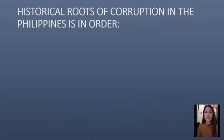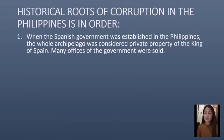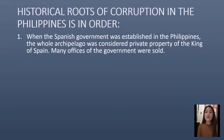For us to understand corruption in the Philippines, here is a look at the historical roots of corruption in the Philippines. First, when the Spanish government was established in the Philippines, the whole archipelago was considered private property of the King of Spain. Many offices of the government were sold. The excesses and abuses of government personnel, both to the finances of the King and the Filipino people, were notorious and scandalous.